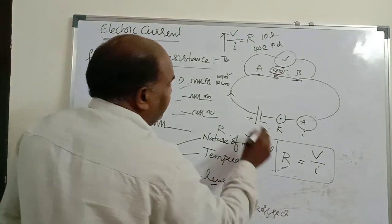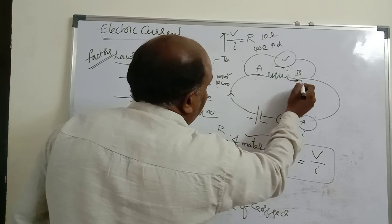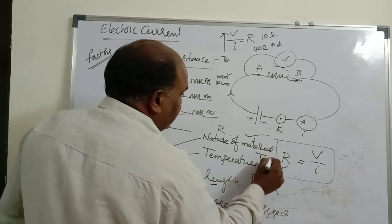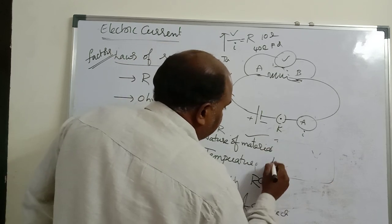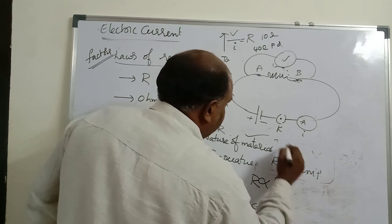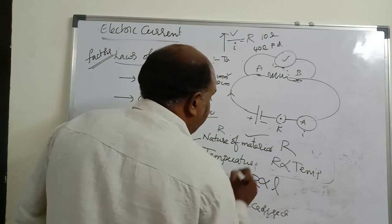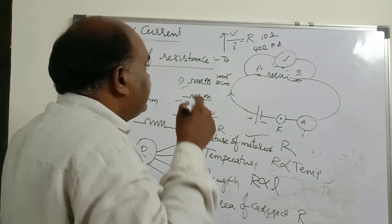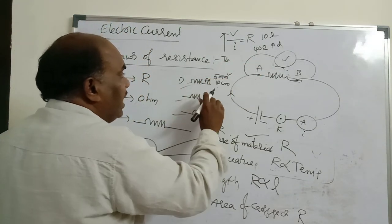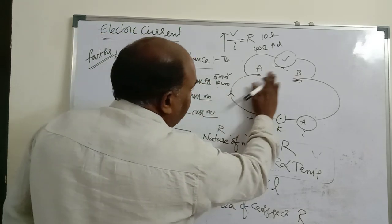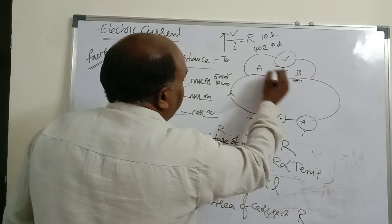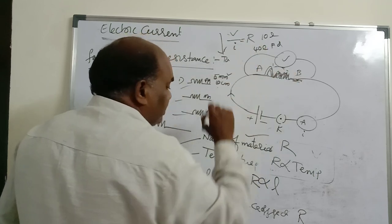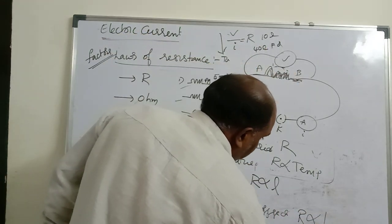For length: instead of 10 centimeter wire, take 20 centimeter. The V/I ratio increases — so resistance is directly proportional to length. For area of cross section: instead of 1 millimeter square, take 5 millimeter square. The V/I ratio decreases — so resistance is inversely proportional to area of cross section. Like a fat person has less resistance, a thicker wire has less resistance.